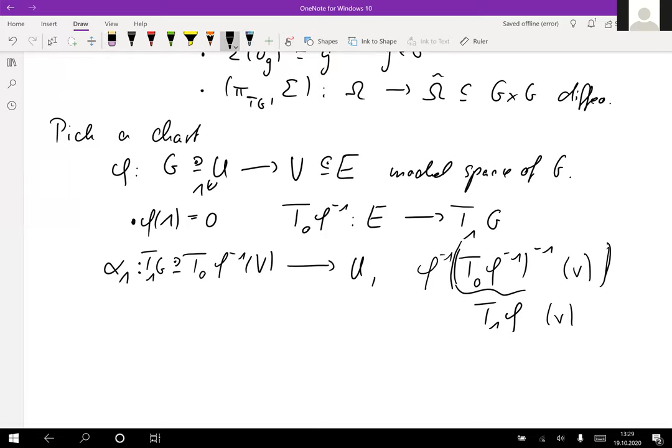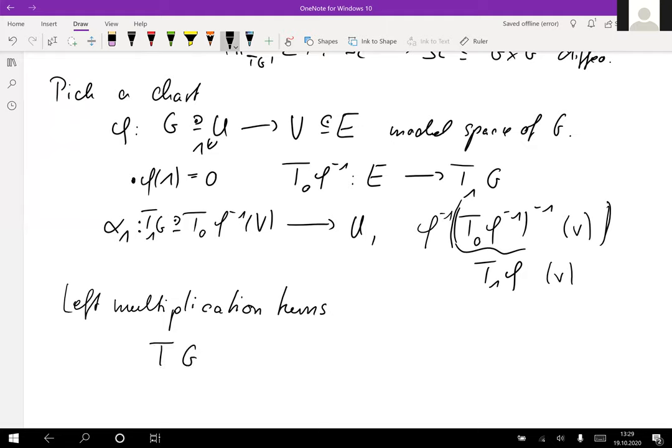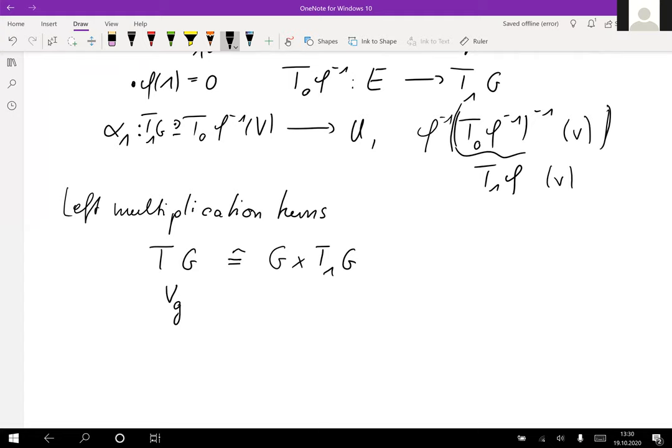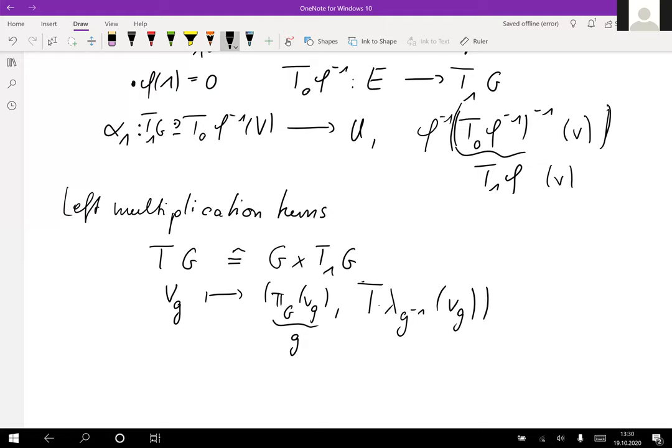Let us now use left multiplication, which turns the tangent bundle into a trivial bundle. We can identify the tangent bundle of G as G times T_1 of G. If we have a vector v over the base point g, we send it to the bundle projection, or in other words to g, and then we use the derivative of the left shift with the base point g inverse to pull back our tangent element into the tangent space at the identity. This map is a smooth diffeomorphism.